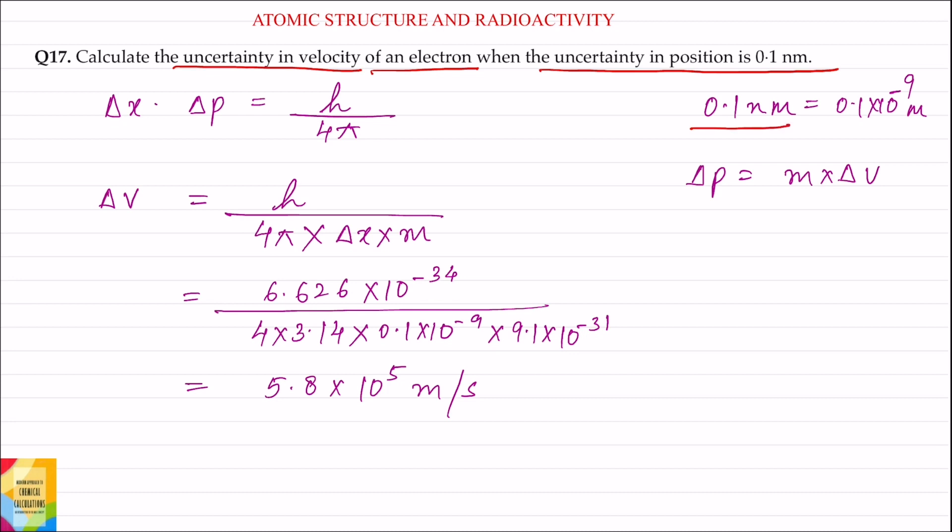First of all, 0.1 nanometer is equal to 0.1 into 10 to the power minus 9 meter. And we know that uncertainty in momentum, that is delta p, is equal to m into delta v, where m is the mass and delta v is uncertainty in velocity.